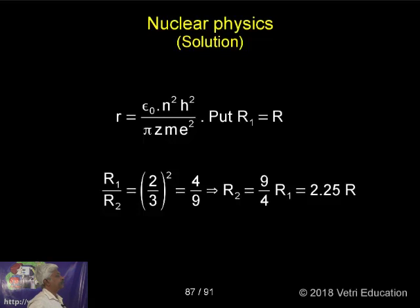We have discussed that radius of an atom R is equal to epsilon naught h squared n squared by pi z m e squared. Put R1 is equal to capital R.